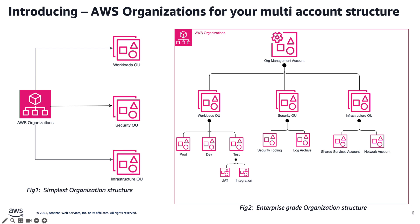Looking at this slide from left to right, on the left we have a basic organization structure in its simplest form, spread across three organizational units — one each for workloads, security, and infrastructure — each a dedicated unit for its specific purpose. As we move right, we expand into an enterprise-grade AWS organization structure which includes multiple accounts in each of those OUs. This is the most common structure we find large enterprises utilize and expand upon for their AWS environments.